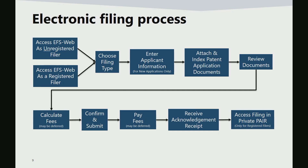The next screen will allow the applicant information to be entered. Next, attach and index patent application documents. The documents can then be reviewed. The next step is to calculate any fees. Next, the patent application can be submitted. Before the acknowledgement receipt is generated, the option to pay fees is provided. After the fees are paid or skipped, the receipt is generated, which contains the application number. Finally, the ability to review the filed application in Private PAIR is available.